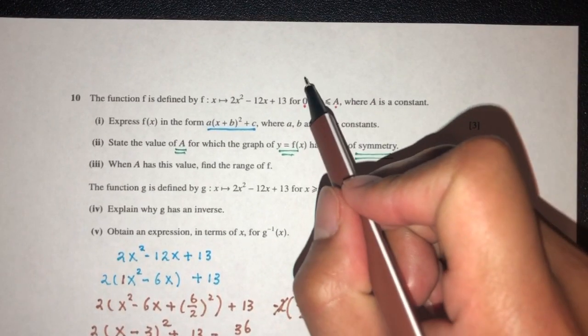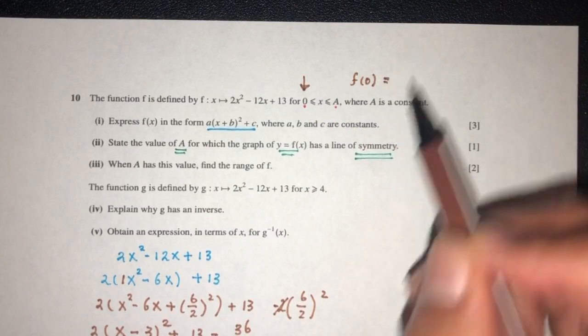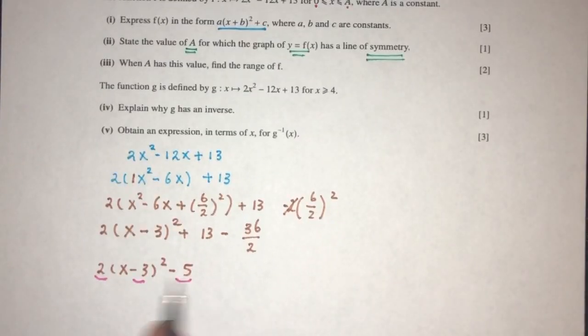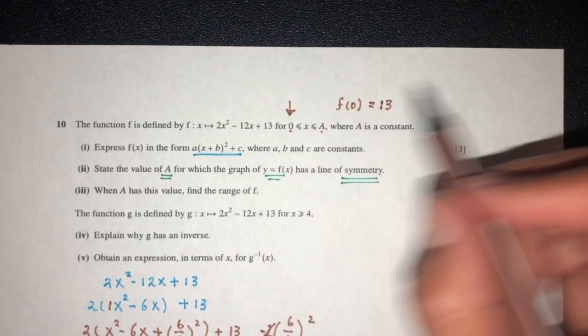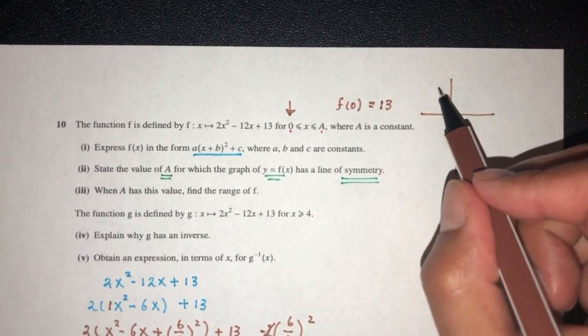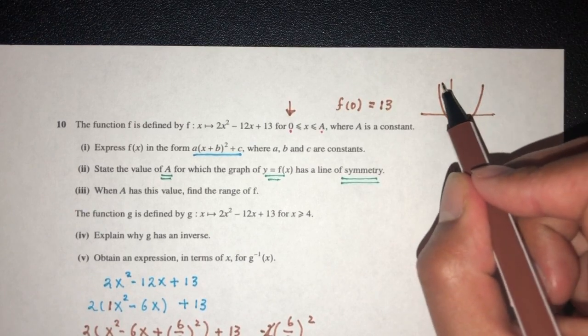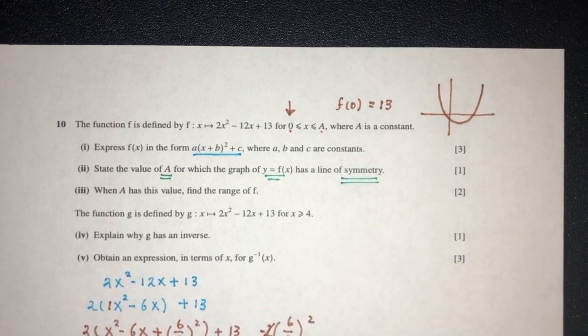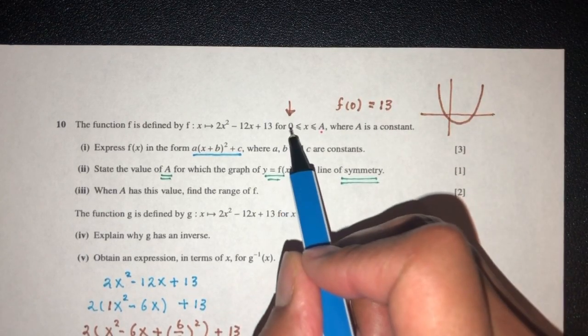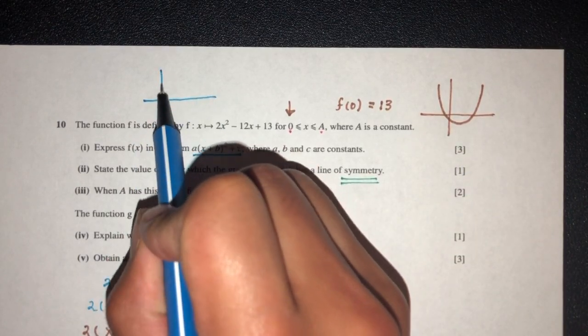Because here we have 0, let's replace 0 first in the equation. What is f of 0? You will have, replace 0 here, or 0 here even, that will give you 13. If you understand, the shape of the graph will be something like this. Because it is from 0, we have passed the value of 0. We have to make something kind of accurate for you to understand.